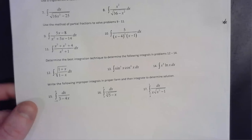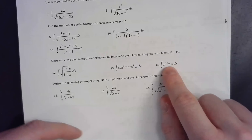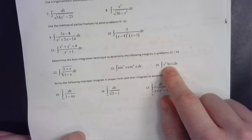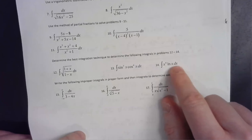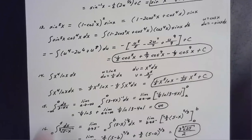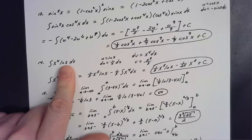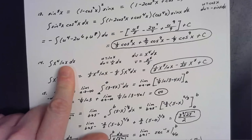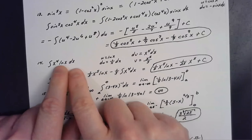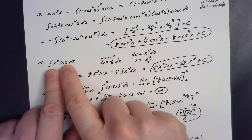For the last of the mixed-technique problems, number fourteen is the integral of x⁴ ln(x) dx. As soon as you see the natural log, you should think integration by parts — the L in LIATE stands for logarithmic functions, so we should instantly try integration by parts. Let u = ln(x).